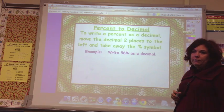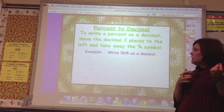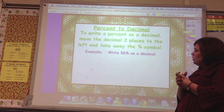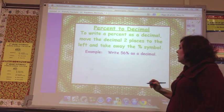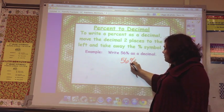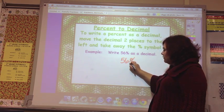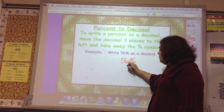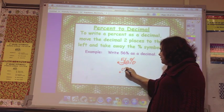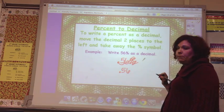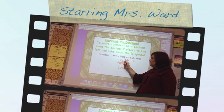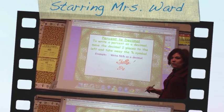Percent to decimal. Well, guess what? This is just Dr. Pepper in reverse. To write a percent as a decimal, move the decimal two places to the left and take away the percent sign. So if I have 66%, my decimal point is here after the whole number. So I go two places. One, two. And because I moved the decimal point, I have to take away the percent sign. So it's just 56 hundredths. So 56% is 56 hundredths.